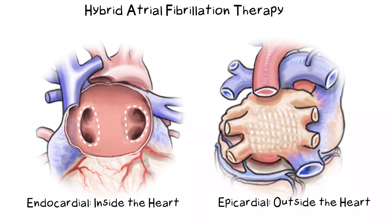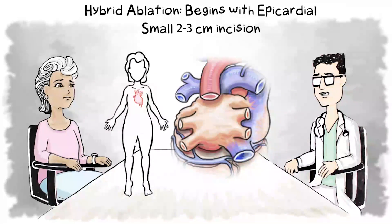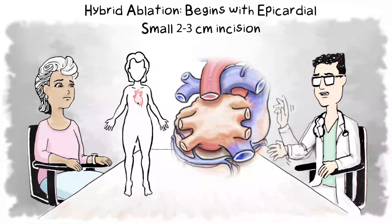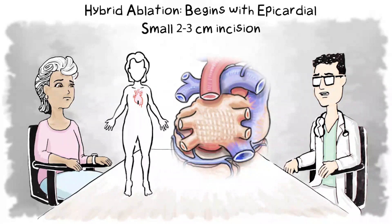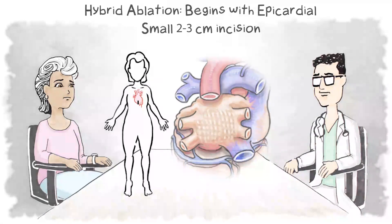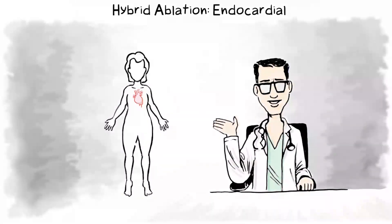Hybrid ablation can be more effective in creating a barrier to stop the erratic electrical signals of atrial fibrillation. Part one of the hybrid procedure is epicardial. The doctor makes a small two to three centimeter incision under the breastbone. Once the doctor has access to the heart, they create lesions across the posterior or back wall of the left side of the heart. These epicardial lesions overlap to create a barrier and target areas that cannot be reached from the inside of the heart.